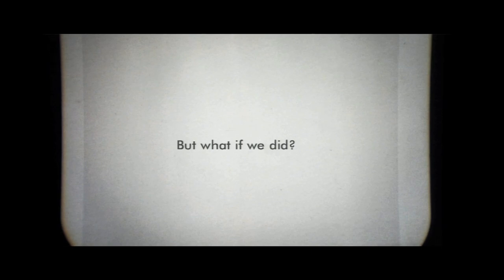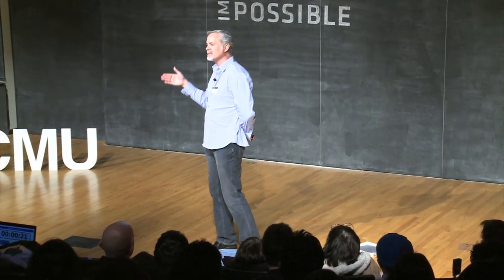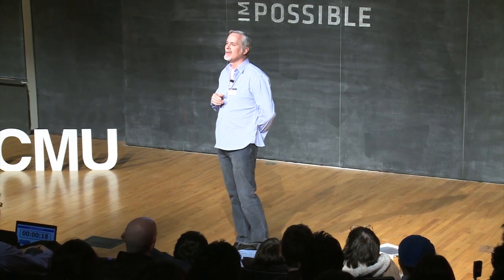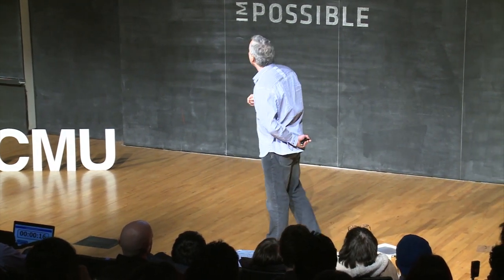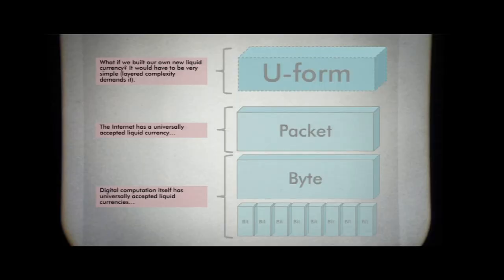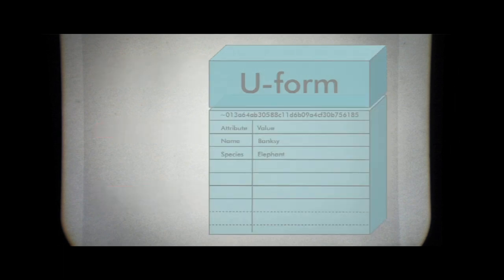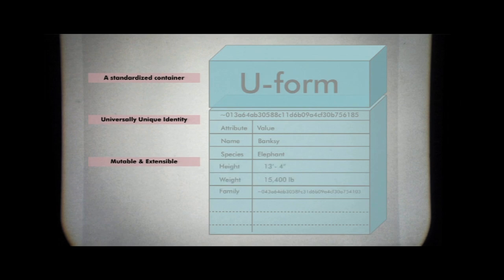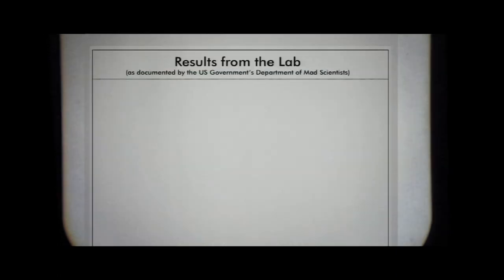But what if we did? This is the research agenda we had — what if we actually built something based on nature? Biomimicry for computing. We decided to build something and called it the U-form, the universal form. It's just an abstract data type, just like the bit and the byte — very simple. We didn't ask people to agree on a whole bunch of stuff. We said: keep it simple. All it is, is a unique identity — just a really long number — plus attributes and values. A standardized container with universally unique identity, mutability and extensibility, able to be massively replicated by the most simple of processes.